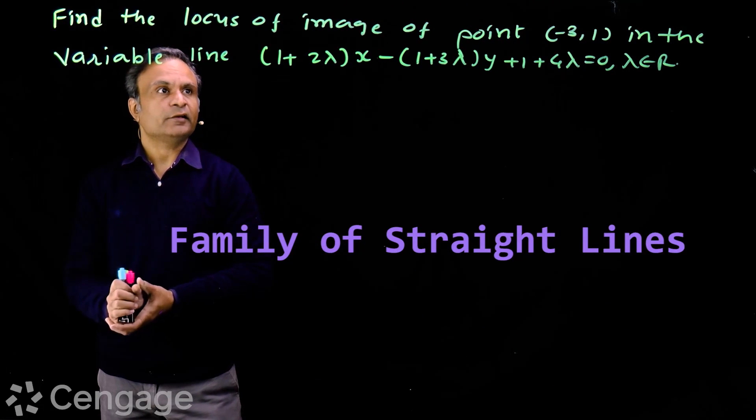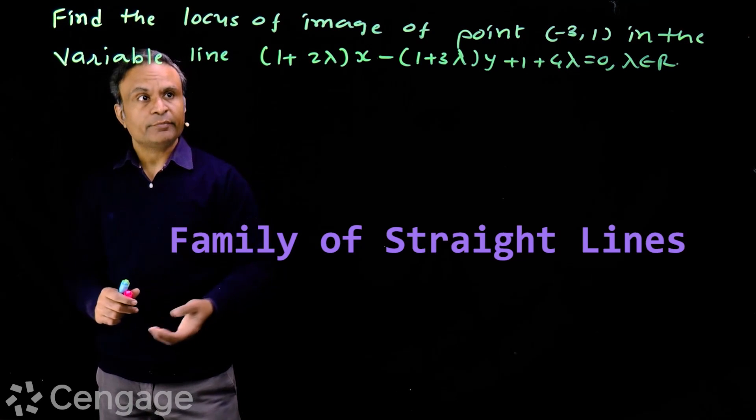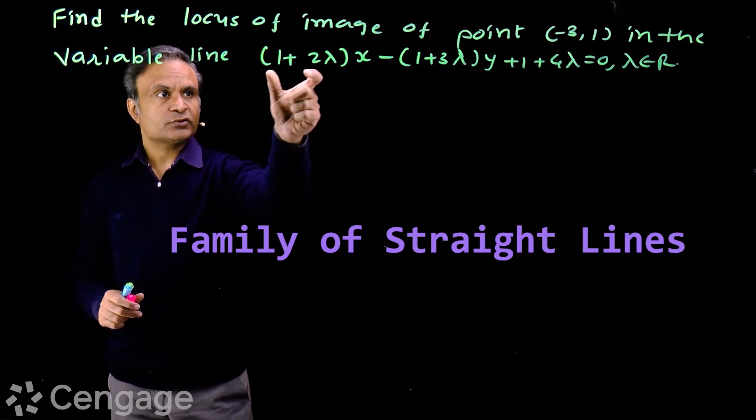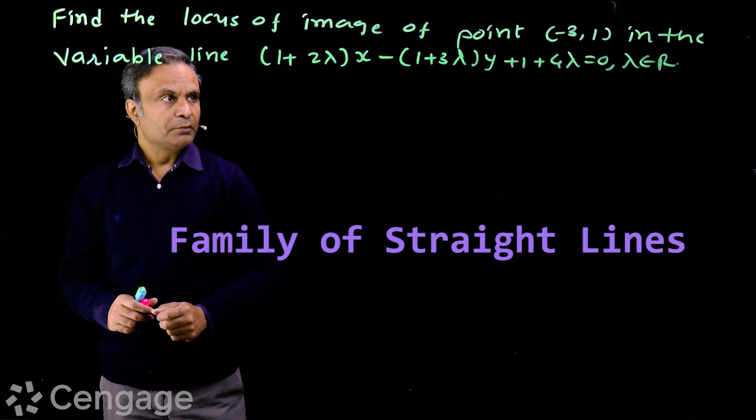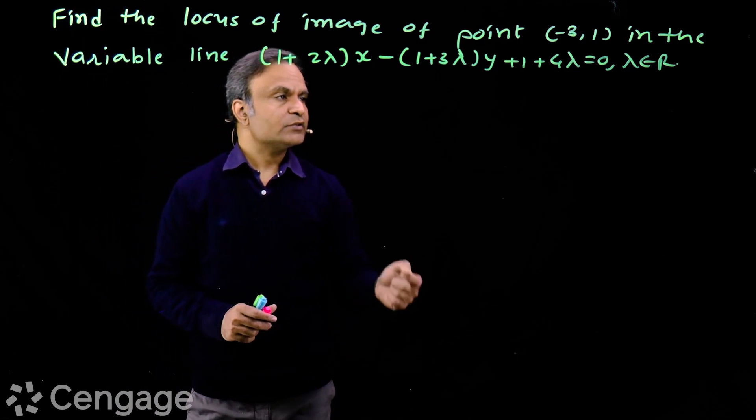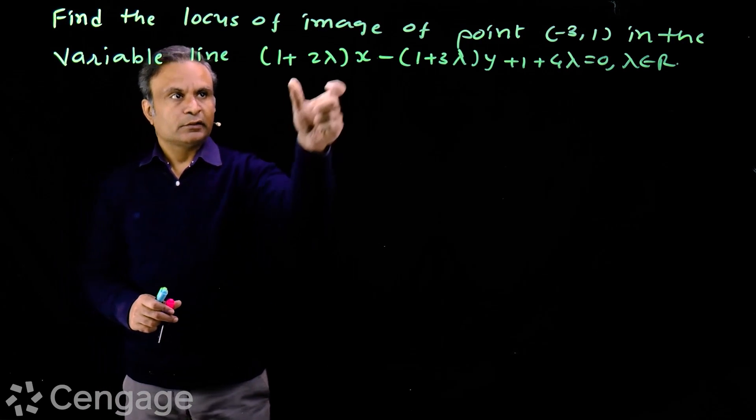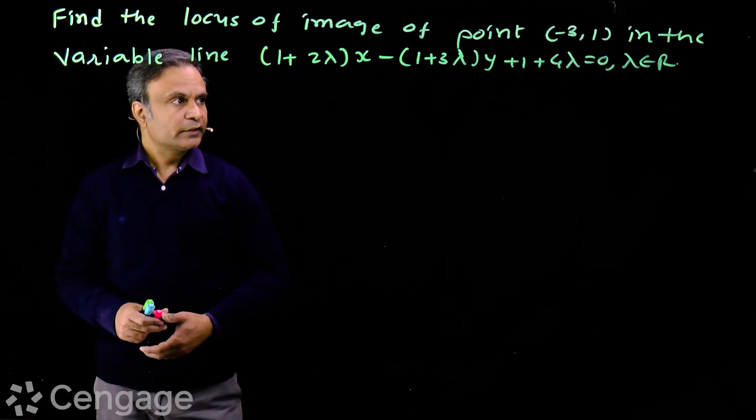Let's try this question now. Find the locus of image of point (-3, 1) in the variable line whose equation is (1 + 2λ)x - (1 + 3λ)y + 1 + 4λ = 0, where λ belongs to R.